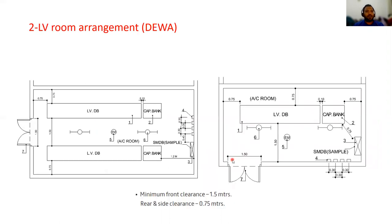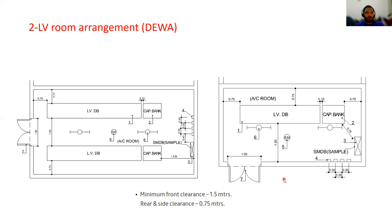Question two: LV room arrangement. This is also per regulation. If the LV panels are arranged front to front, you must maintain a minimum distance of 1.5 meters between panels, 0.75 meters from the walls, and 0.75 meters from the sides. If the LV panel is arranged in front of the door, then 1.5 meters clearance is required.